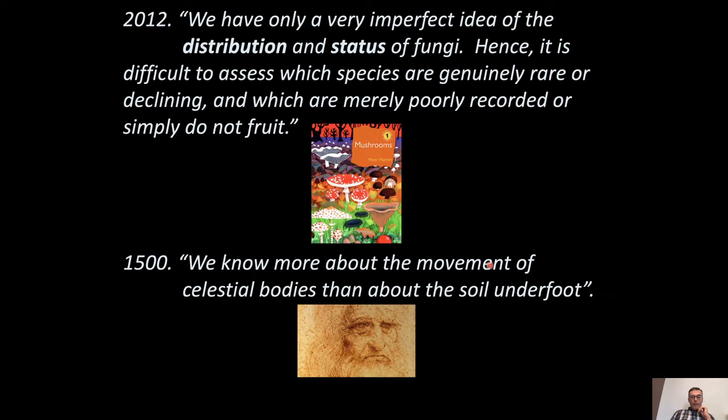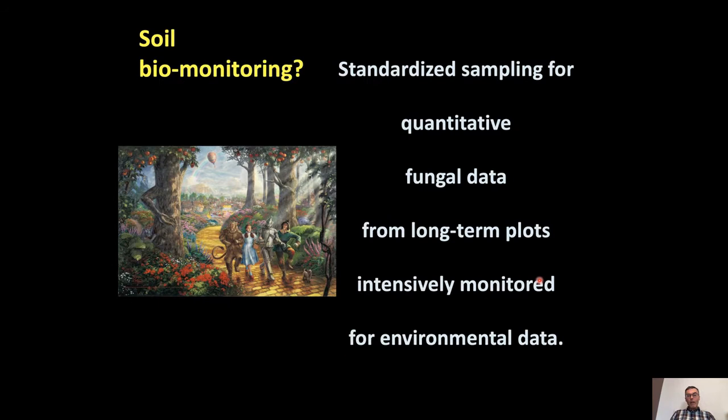In 2012, a British naturalist, Peter Marren, wrote a book and said something interesting: 'We have only a very imperfect idea of the distribution and status of fungi, hence it is difficult to assess which species are generally rare or declining, and which are merely poorly recorded or simply do not fruit.' Nothing new really — this echoes Leonardo in the 1500s saying we know more about the movement of celestial bodies than about the soil underfoot. Soil remains a dark box — very difficult for us to understand what's going on in there.